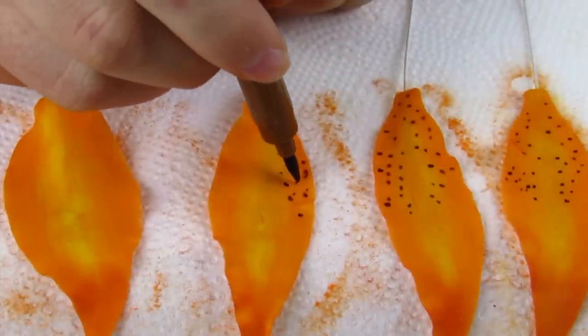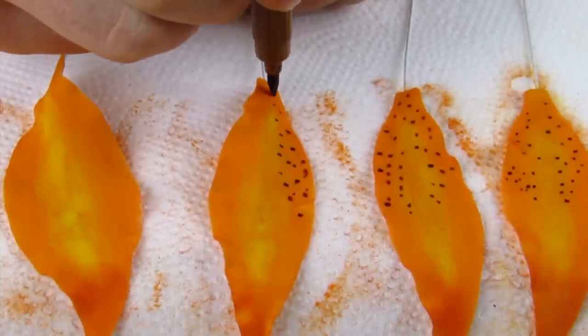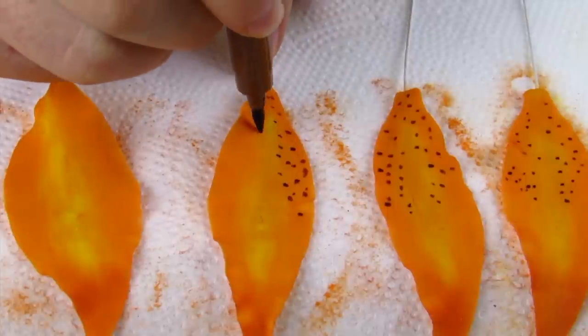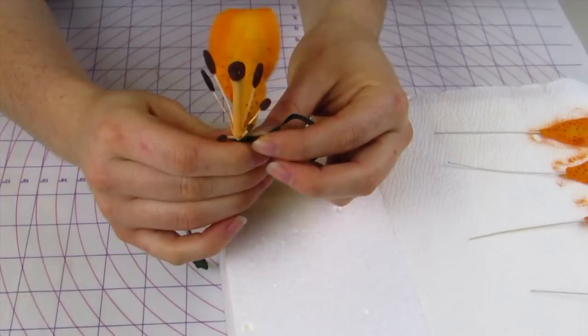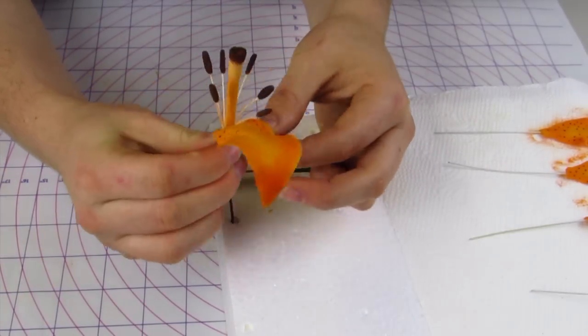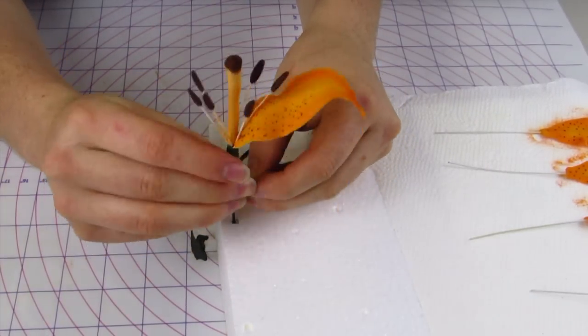Then using a brown edible marker I'm just going to do these dots. I really like the brown compared to the black. I felt the black edible marker was really harsh. You want to set those aside to dry overnight at least.